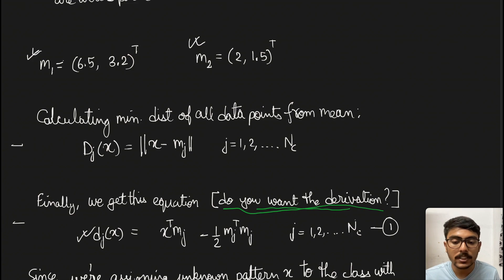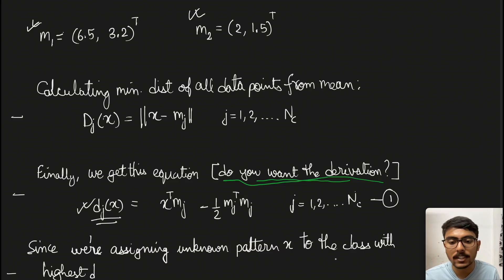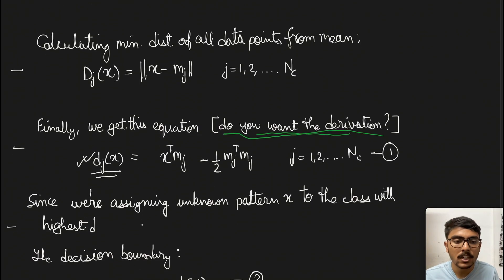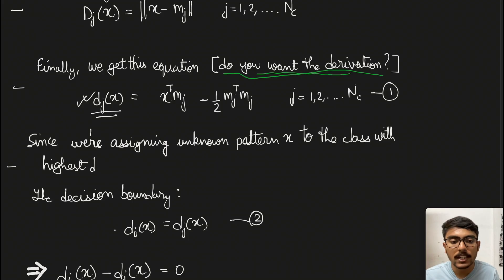This is the distance equation for a particular pattern class denoted by mean vector mj and mj transpose. For all data points in that class, we'll have this distance function. We're assigning unknown pattern x to the class with the highest d. The pattern class with the largest value of d gets assigned pattern x. The decision boundary comes out to be di = dj.